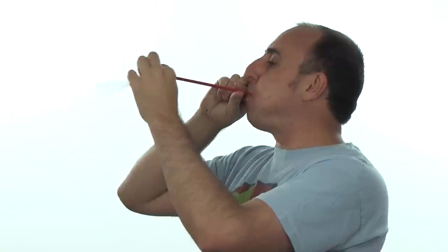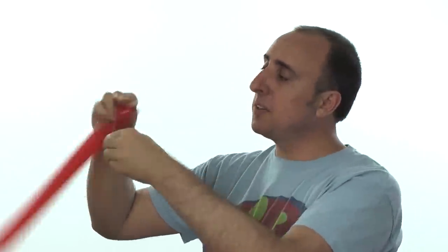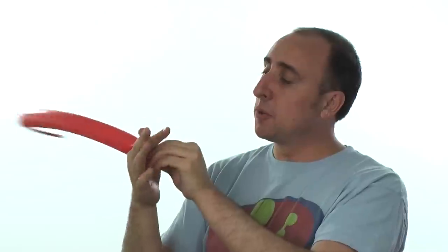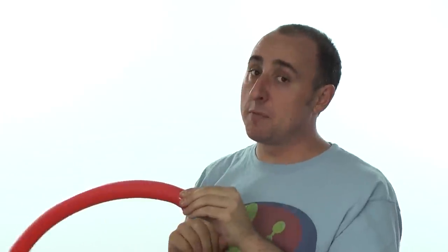Let me show you how to make it. To make our ladybug we need a red 260. Inflate it about halfway. Let some air out so that we can tie it with ease. Give the balloon a stretch to keep it from popping on us.